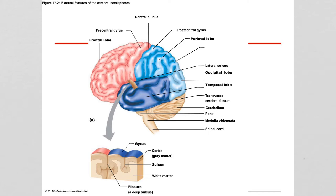We have another sulcus that divides the frontal and parietal lobes from the temporal lobe — this is the lateral sulcus. And separating the cerebrum from the cerebellum, we have the transverse cerebral fissure.